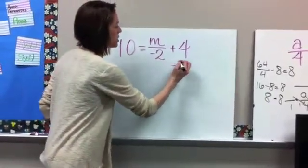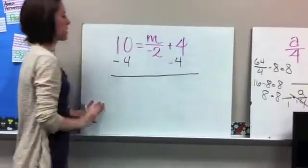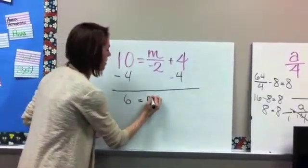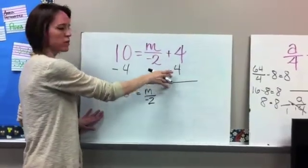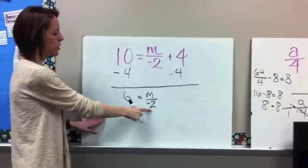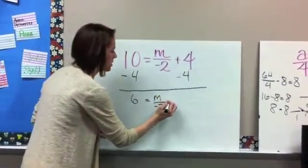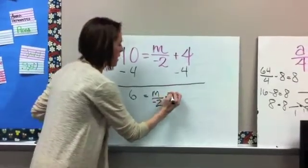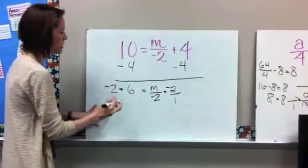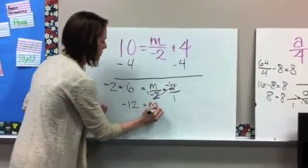So positive 4, inverse operation is negative 4. So if we have a negative 4 on this side, we have to keep it balanced and have a negative 4 on that side. So 10 minus 4 gives us 6. The m divided by negative 2 stays the same because it can't combine with anything. And plus 4 minus 4 gives us 0. So now we're back here to our one-step equation by division. So m divided by negative 2 gives us 6. We need to get rid of this negative 2. So the inverse operation of division is multiplication. So remember, we're going to multiply by negative 2, not just 2. So we have negative 2 over 1. If we multiply this side by negative 2, we have to multiply that side by negative 2. Negative 2 times 6 is negative 12. And these negative 2s cancel out to give us 1. And we're left just with m.